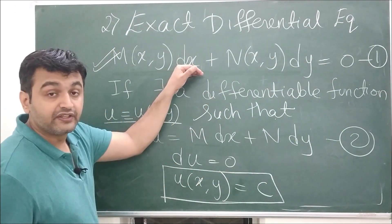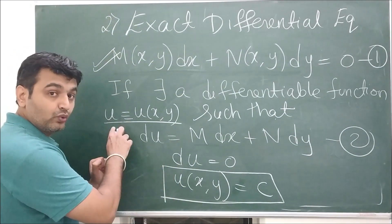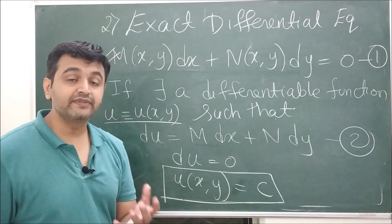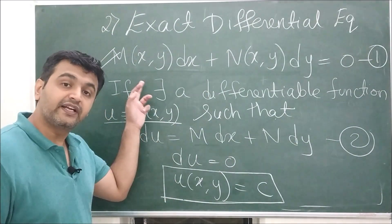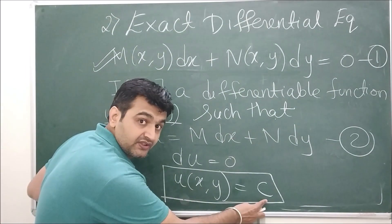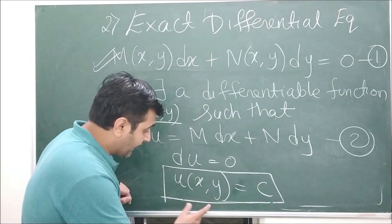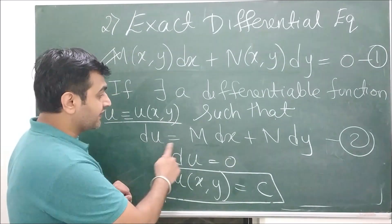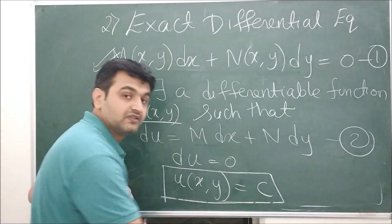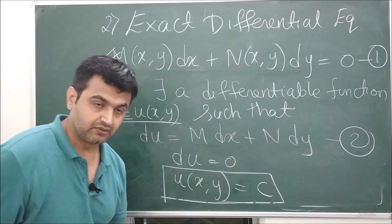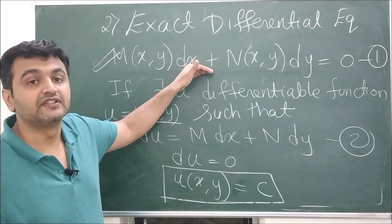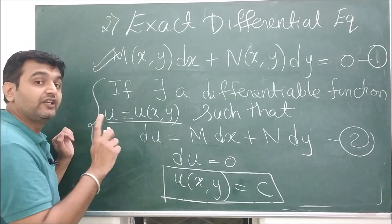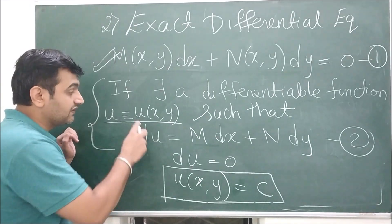Once we find u, our job is over because u = c is the solution. If you recall, something is called a solution if when you differentiate it you get back the differential equation. Here, taking the total derivative of u = c gives du = 0, and the total derivative of u gives the left-hand side, so we get the left-hand side equal to zero — confirming u = c is indeed the solution.